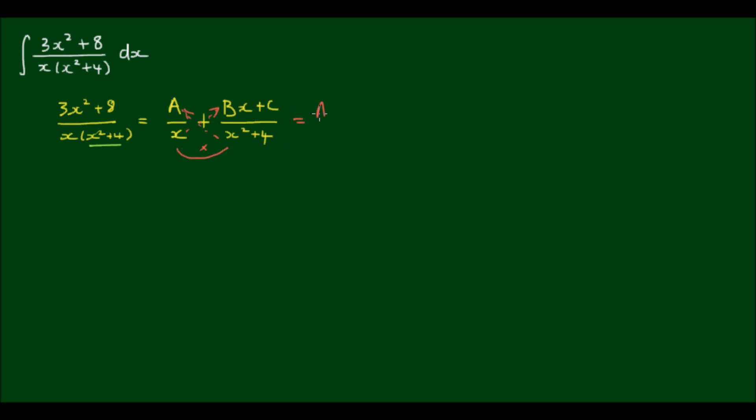And this gives me A(x² + 4), sorry, x² + 4, plus x times (Bx + C), all over x(x² + 4).